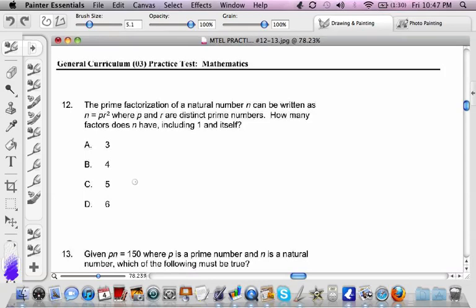Number 12 on the general curriculum practice test, math test. The prime factorization of a natural number n can be written as n equals p r squared, where p and r are distinct prime numbers. How many factors does n have, including one in itself?